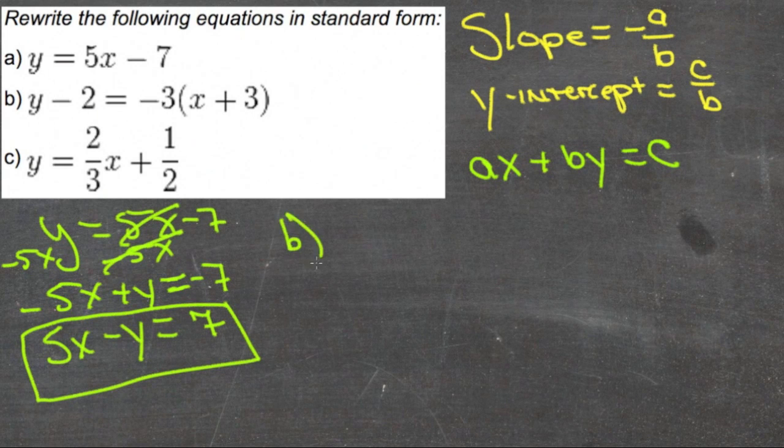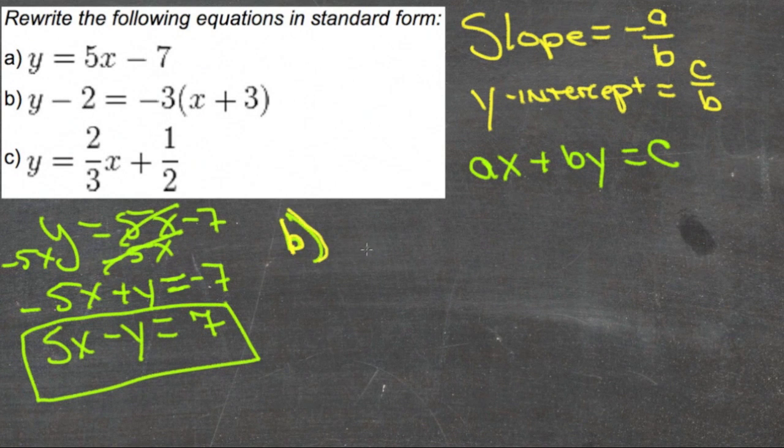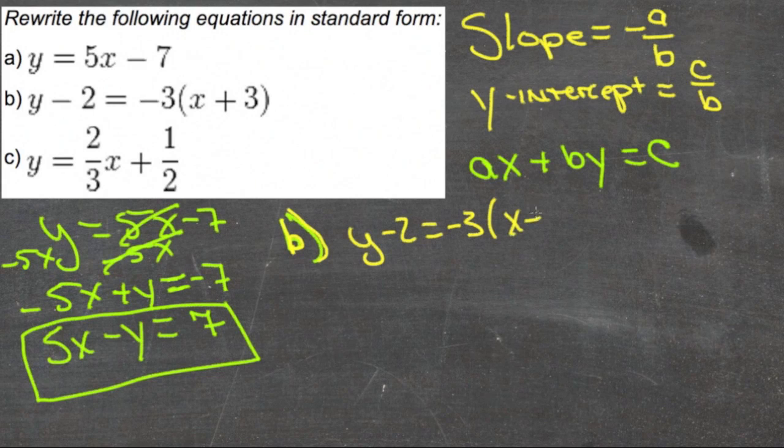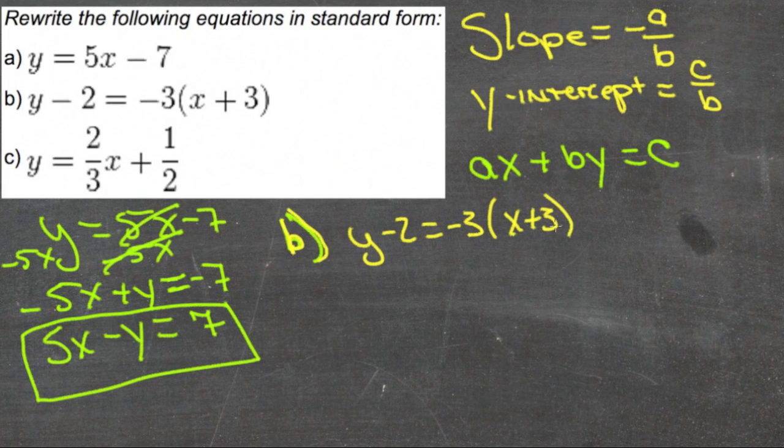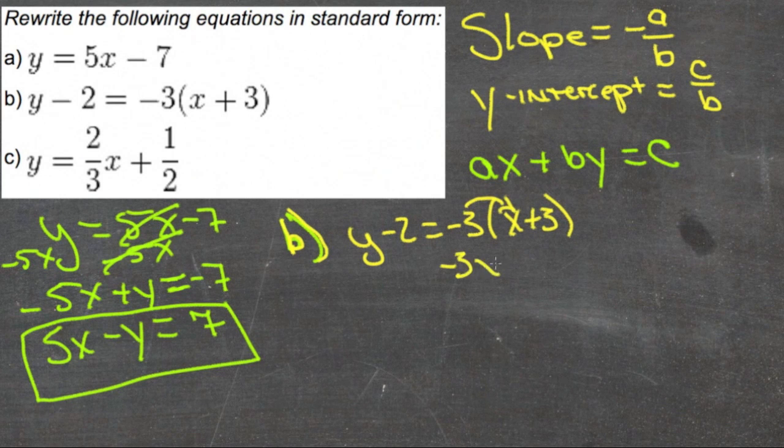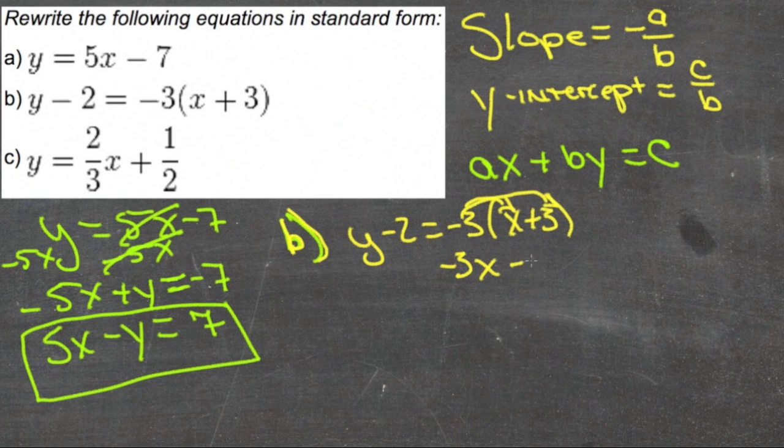For b, we have y minus 2 equals negative 3 times the quantity x plus 3. The first thing we should do is distribute. We'll get negative 3 times x, which gives us negative 3x. And negative 3 times 3 gives us negative 9.